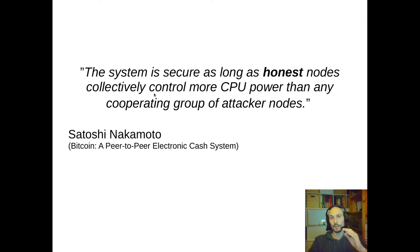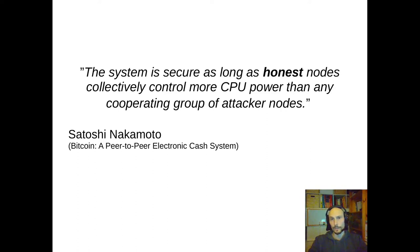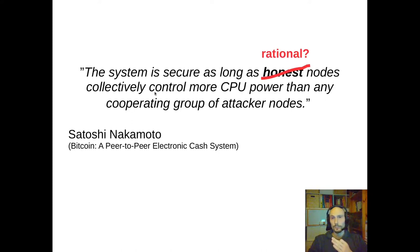The key element all bribery and incentive manipulation attacks have in common is that they do not only differentiate between honest and Byzantine nodes, but they assume that a substantial portion of nodes acts rational. And immediately the question occurs: what happens to this statement if we replace 'honest' with 'rational'? The first step toward answering this is to better compare existing attacks in this space to each other.